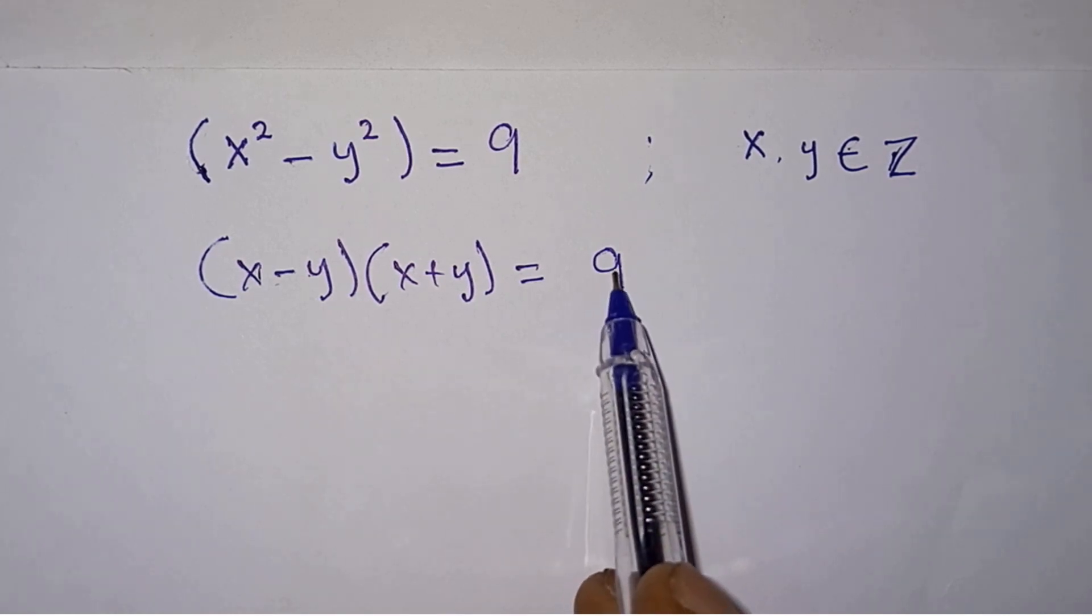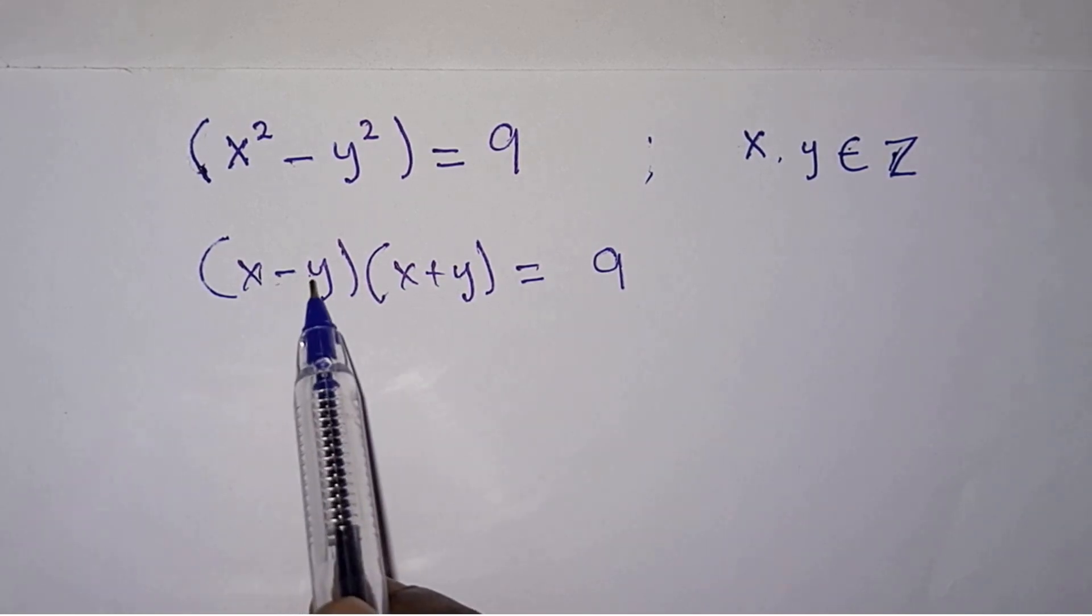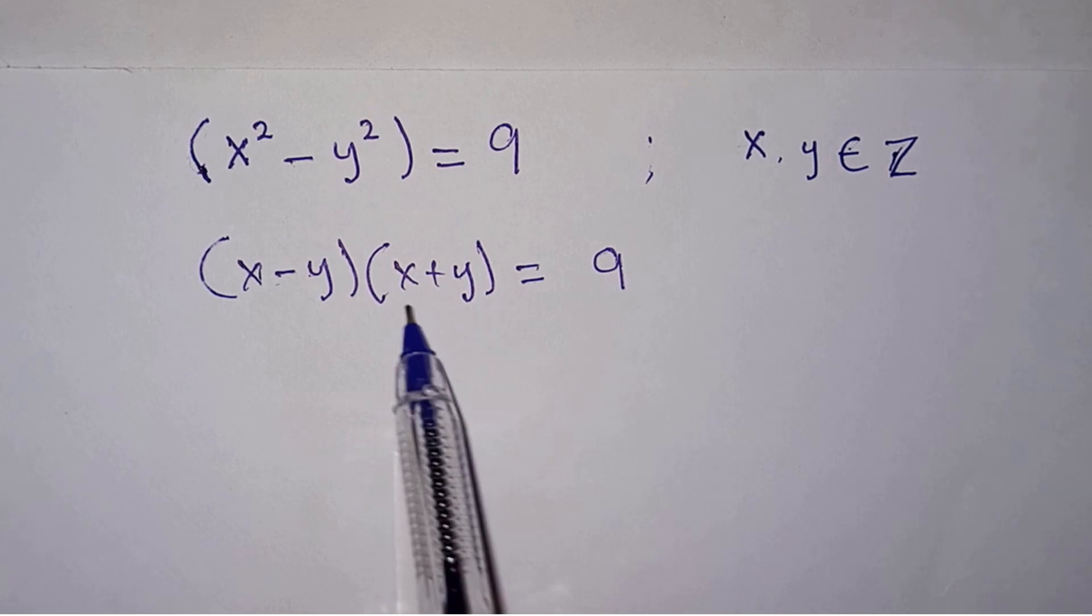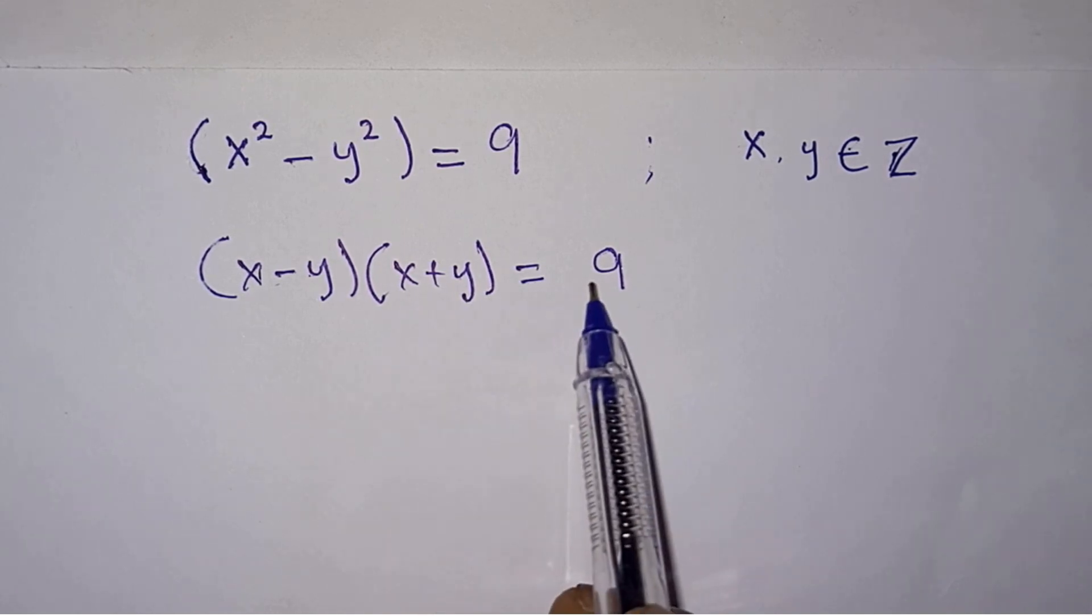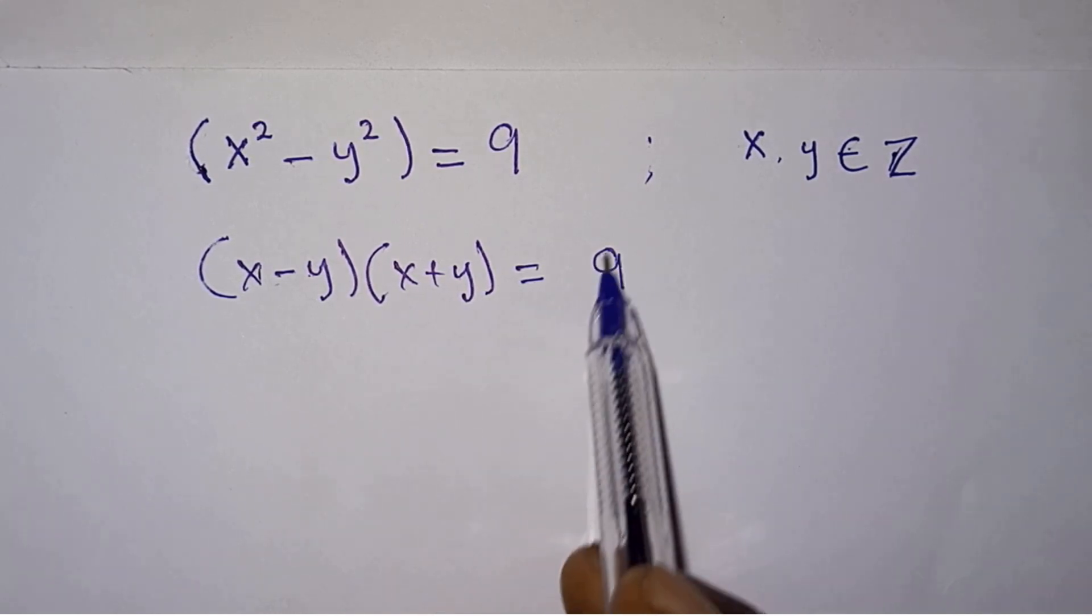Since the right hand side is not zero, we can say that x minus y is equal to 9 or x plus y is equal to 9. No, we can't say that because this is not zero.